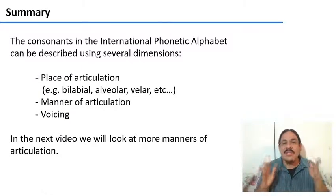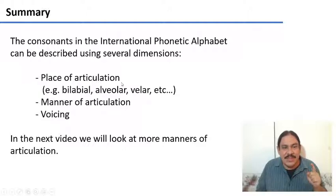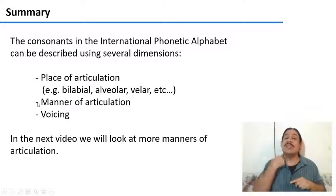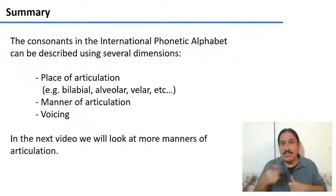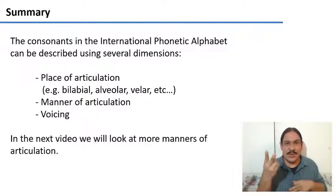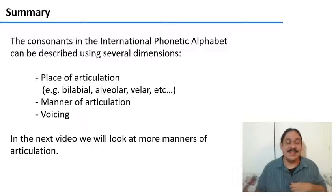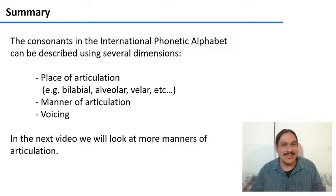So consonants need to be described using several dimensions. First, the place of articulation, bilabial, alveolar, and so forth. And also the manner of articulation, the way in which the air rushes out, which can be stop, fricative, and so forth. For example, an alveolar fricative is like an S, because it has alveolar place and fricative manner. In the next video, we'll look at even more manners of articulation.